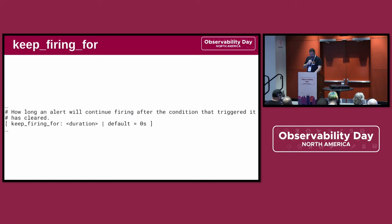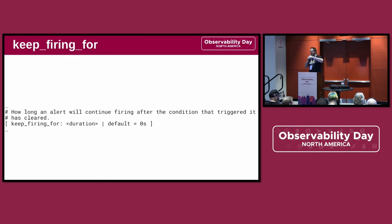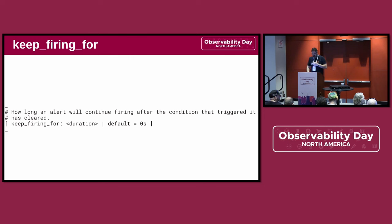Brian is going to talk about this later. We have a quite nice quality of life improvement: something called keep_firing_for, which you can put into your alerts. It's not yet a full hysteresis, but when your alert is at the edge of your alerting condition, you don't stop the alert and then re-fire it 30 seconds later. You can actually maintain this for some time, so things don't go away while you're looking at them. I highly encourage you to put this to a few minutes and see how you like it.